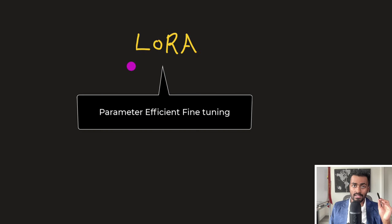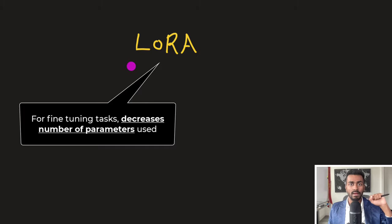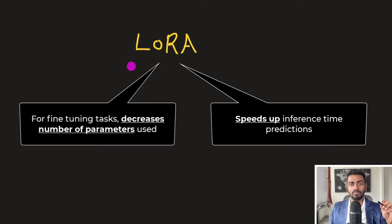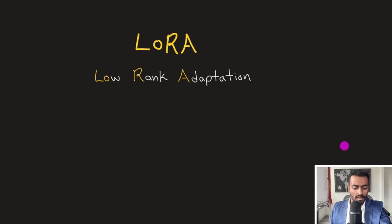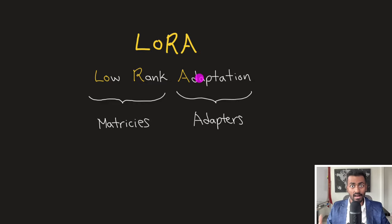LoRA is a method of parameter-efficient fine-tuning. Using LoRA for any additional fine-tuning task, we can decrease the number of additional parameters used while also speeding up inference-time predictions. LoRA stands for low-rank adaptation, where low rank is a property of matrices and adaptation is a property of adapters.